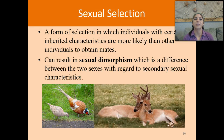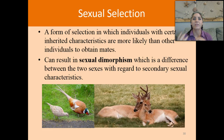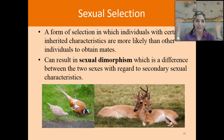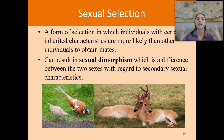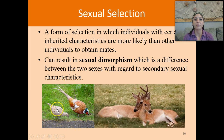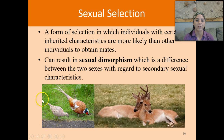A form of sexual selection in which individuals with certain inherited characteristics are more likely than others to obtain mates can result in sexual dimorphism — meaning there's a huge difference in the size of the female versus the male. One of the most common examples that pops to my mind are sperm whales. The male sperm whales are just enormous compared to the females, who are much, much smaller. You can see that right here in this species of bird as well. The females are obviously a lot more drab in color, and she's also much smaller than the male.